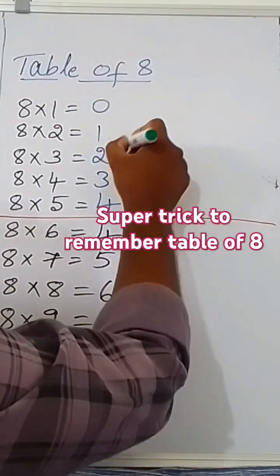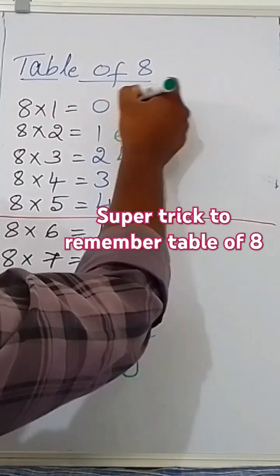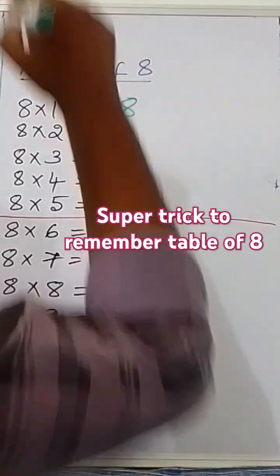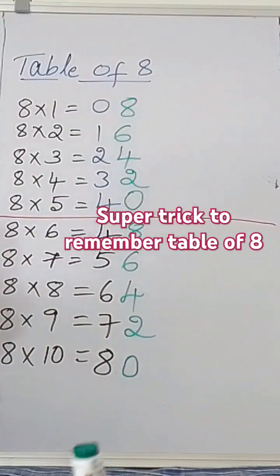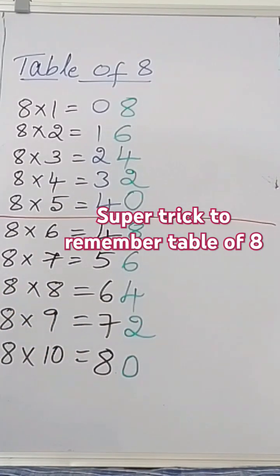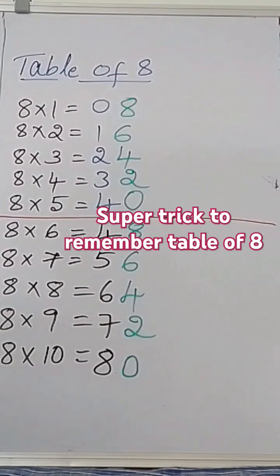0, 2, 4, 6, 8 — this is the table of 8! It's very easy to remember. If you like this video, click the like and subscribe button beside my name. Click the subscribe button at the bottom of this video to get more videos. Thank you!